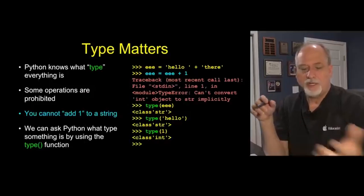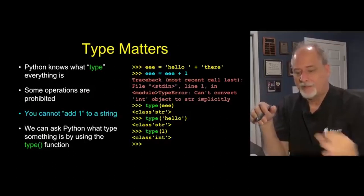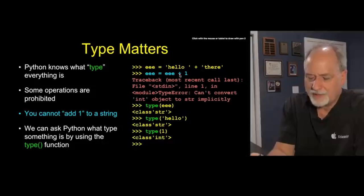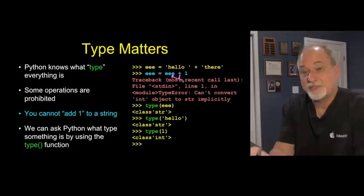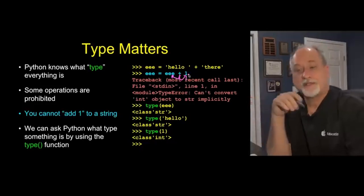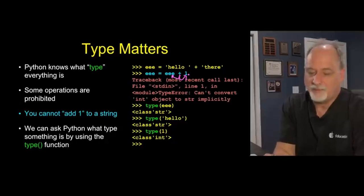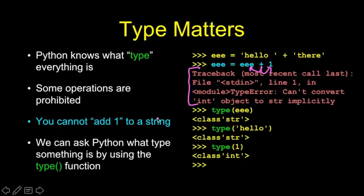Sometimes type can get us in trouble. So here we have eee which is hello there because we've concatenated these two strings together, and now we're adding 1. The problem now is that it looks on one side and says that's a string, and that's a number, and says I don't know how to do that. This is another one of those annoying errors that you think Python doesn't like you, but it's just confused.